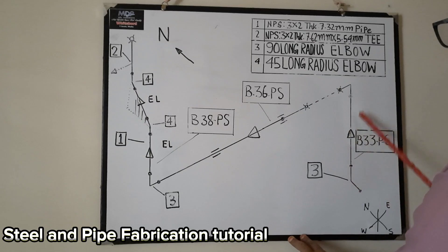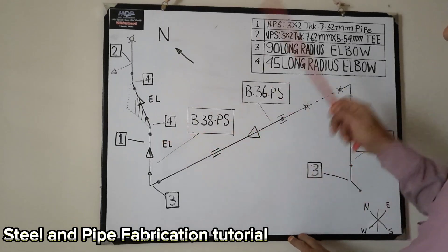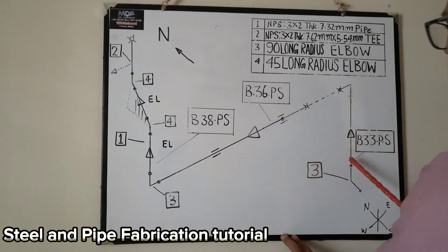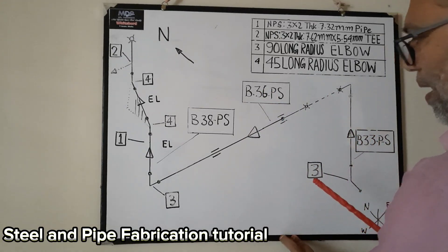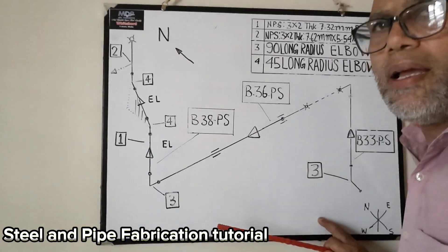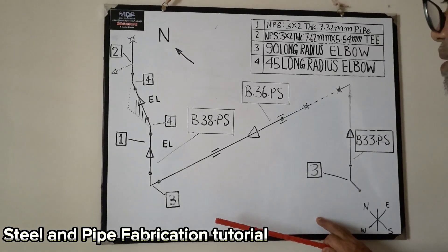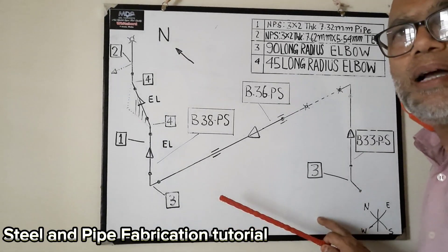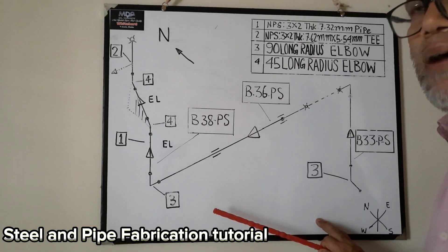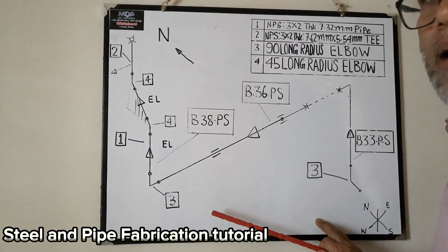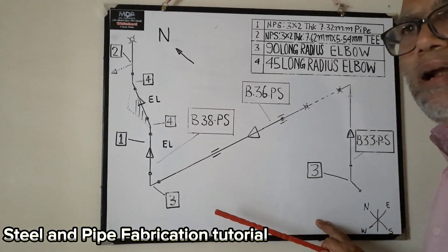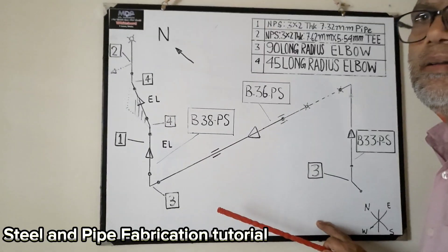If we weld together and bring to the erection place, if the place is not clear and has some equipment, it's not possible to erect this pipe. For example, when we work in the project, sometime the company procedure is: the pipe is fabricated in the workshop, and after fabrication, welding and painting finish, then bring on site to the field for erection.